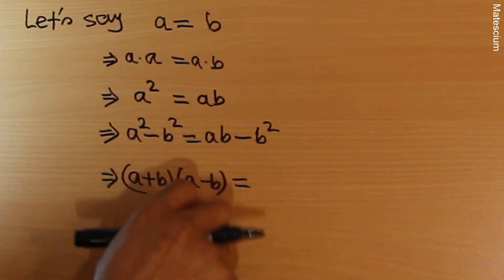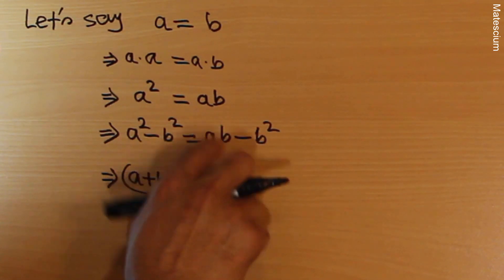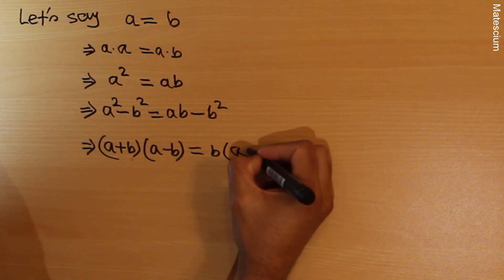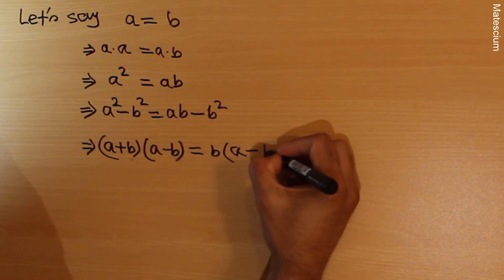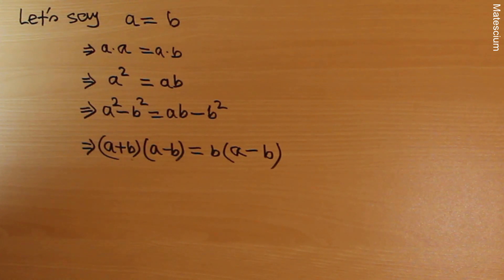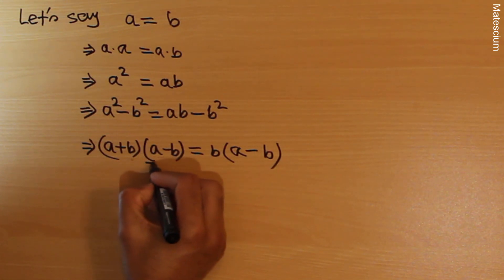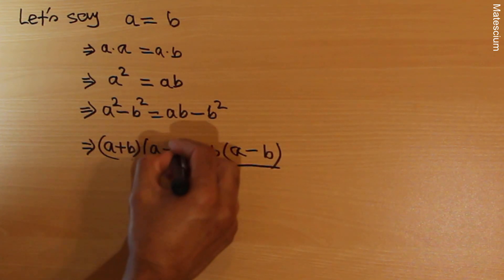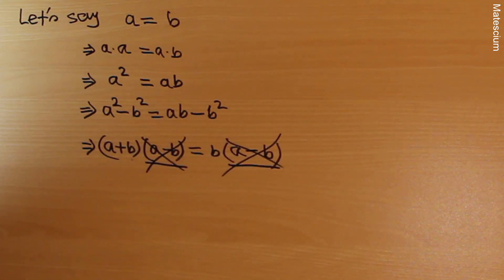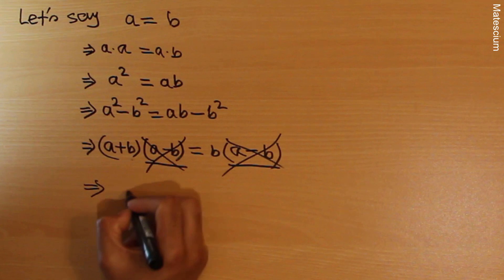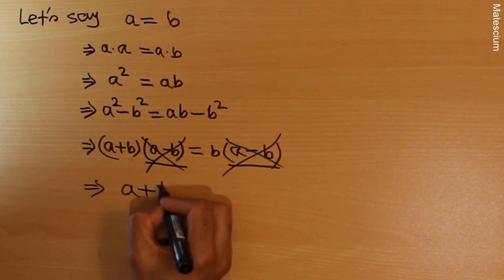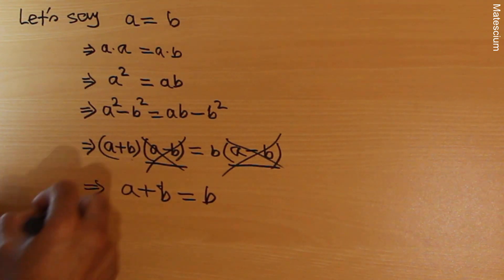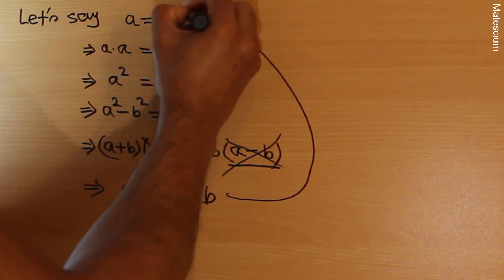So the left-hand side becomes a plus b times a minus b. On the right-hand side, they have a common factor of b: taking b common, the remaining factor is a minus b. Now from the left-hand side this factor of a minus b and from the right-hand side this factor of a minus b are the same, so they cancel each other from both sides. Remaining is a plus b on the left and b on the right.